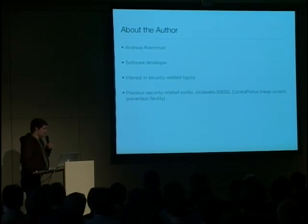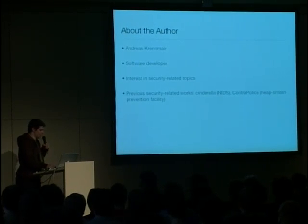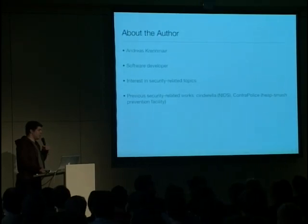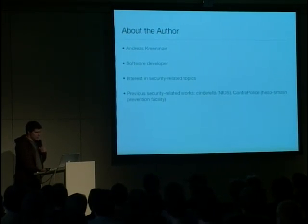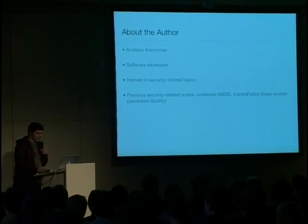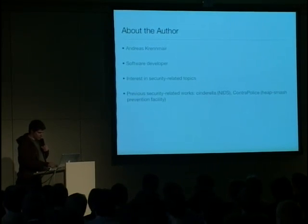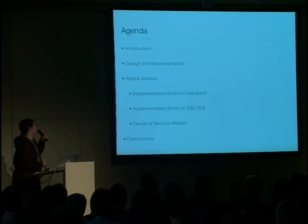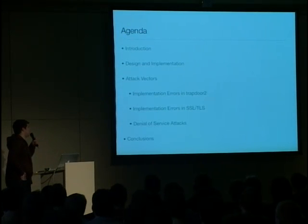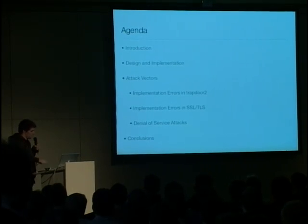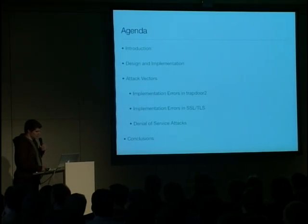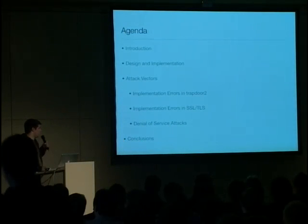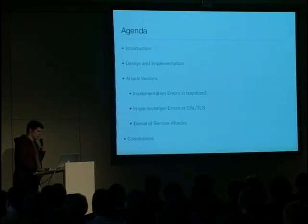And here I'm going to present something new. I'm going to talk about Trapdoor 2 — I will explain what it exactly is later. The agenda is: a general introduction, then the design and implementation of Trapdoor 2, then about the possible attack vectors — the obvious ones and the not so obvious ones — implementation errors in Trapdoor 2 itself, implementation errors in SSL/TLS implementations, and what we can do about denial of service attacks at the application level.